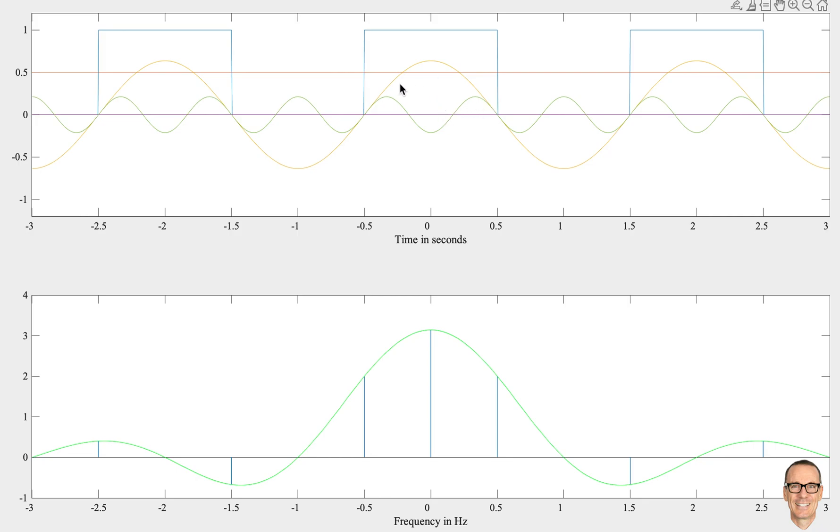I think intuitively you can see it makes sense when we're trying to construct the blue. If we add the yellow to the green, at these transition times where the blue transitions, they've both got this gradient which is in the correct direction. We need to keep adding more and more to it. But the more of them we add with that correct gradient there, the steeper and steeper the slope is going to be when we add them all up.